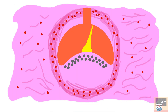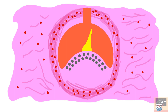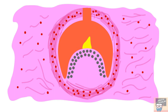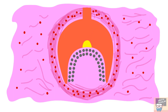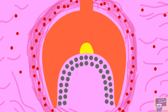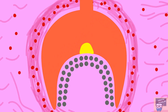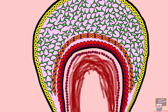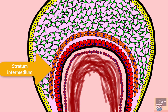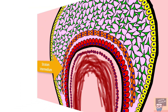As proliferation of epithelial cells continues, the cap stage transitions into the bell stage, where morphodifferentiation and histodifferentiation continue, leading to formation of the stratum intermedium. The bell stage can be discussed in early and late bell stages.